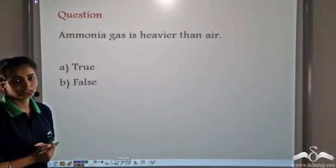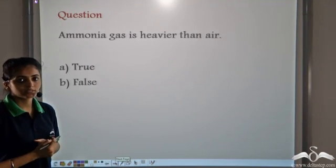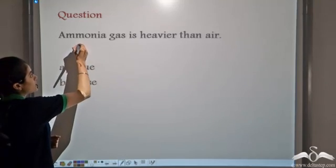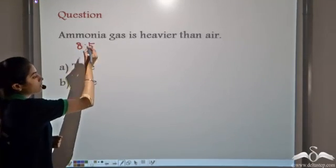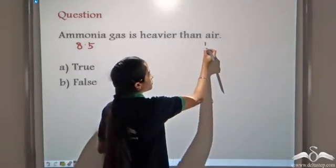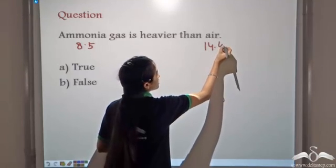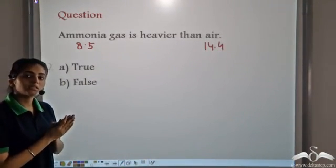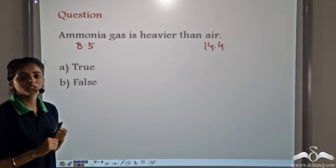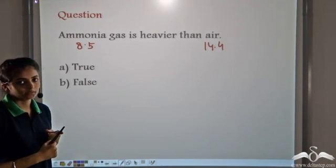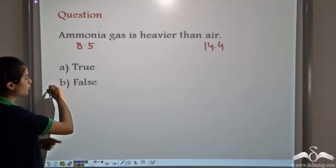Ammonia gas is heavier than air — is it true or false? We know that the vapour density of ammonia is 8.5 and the vapour density of air is 14.4. So ammonia is not heavy; it is lighter than air, and that is why it is collected by downward displacement of air. So the given statement is false.